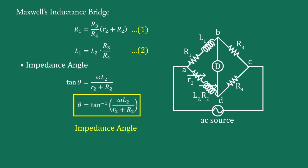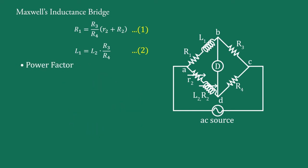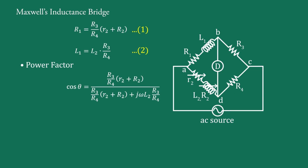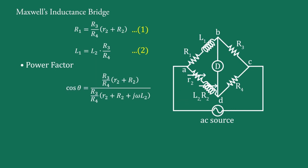The second parameter is power factor cos θ. For a series R1-L1 connection, power factor is defined as cos θ = R1 / |Z1|, where |Z1| = R1 + jωL1. Substituting the values of R1 and L1 from the balance equations and taking R3/R4 as common in the denominator, R3/R4 cancels. Therefore, cos θ = (r2 + R2) / (r2 + R2 + jωL2).